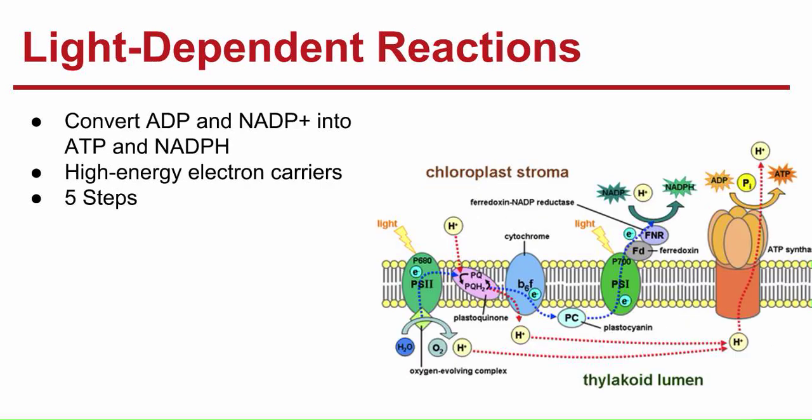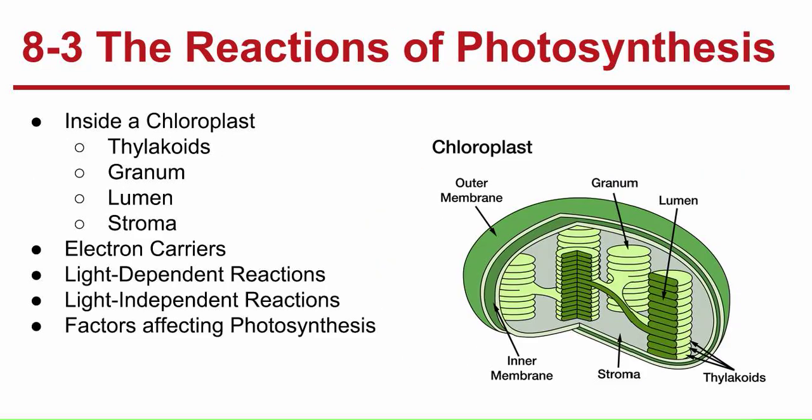Factors affecting photosynthesis. A shortage of water can slow or even stop photosynthesis. Plants in deserts develop ways to conserve water. Temperature—photosynthesis depends on enzymes that function best between 0 and 35 degrees Celsius. If they're not in these temperatures, photosynthesis will slow down or stop. Intensity of light plays a role in affecting photosynthesis.